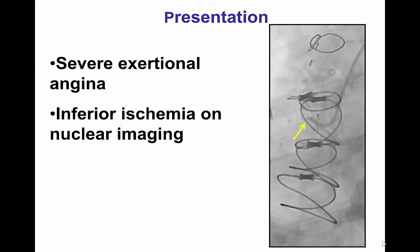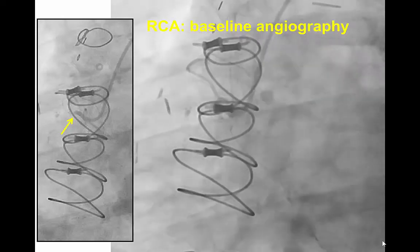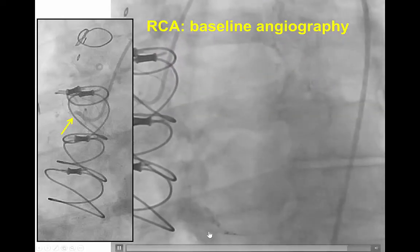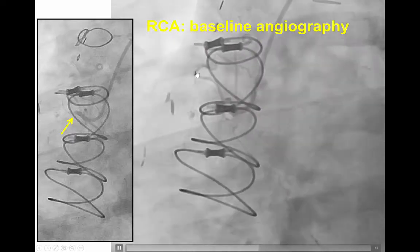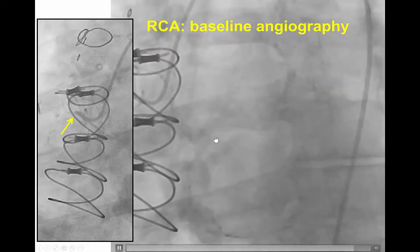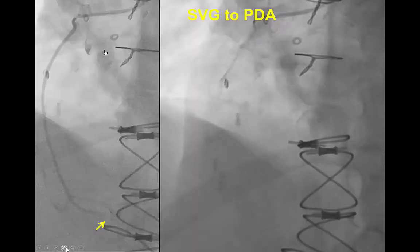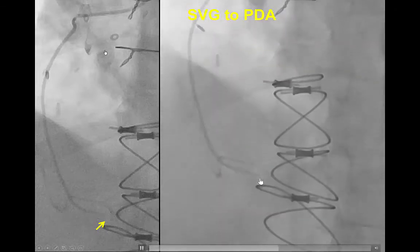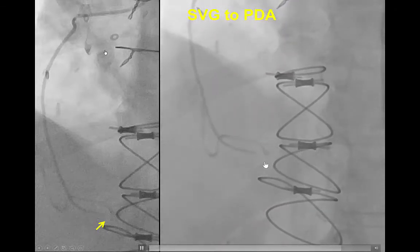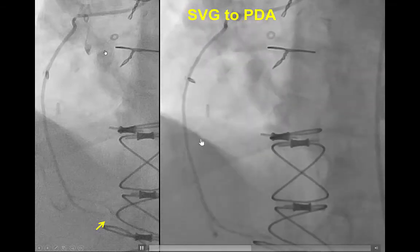The patient presented with exertional angina and had inferior ischemia on nuclear stress tests. Baseline angiography demonstrated a CTO of the proximal right coronary artery. There was a blunt stop with multiple small branches originating proximal to the proximal cap. The distal vessel was filling via a diffusely diseased vein graft with a severe distal anastomotic lesion. There was retrograde filling all the way to the mid right coronary artery.